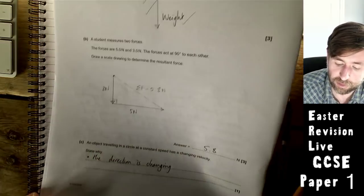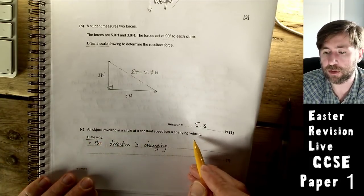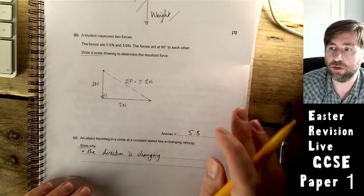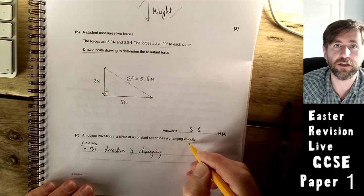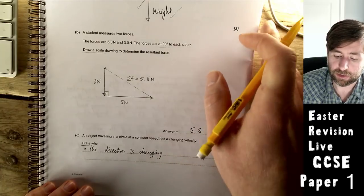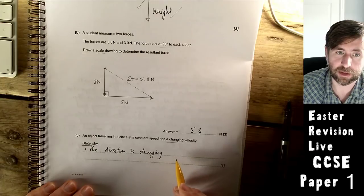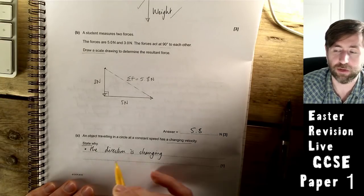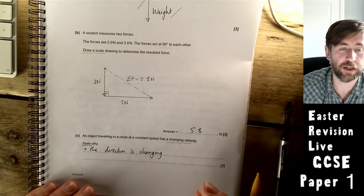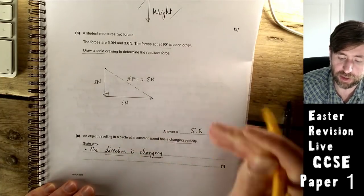An object travelling in a circle at a constant speed has a changing velocity. State why. A velocity is a speed in a given direction. Velocity is a vector. Direction matters. It's changing velocity because the direction is changing. You could have said it's accelerating, it's a change in velocity. But you only needed that the direction is changing.